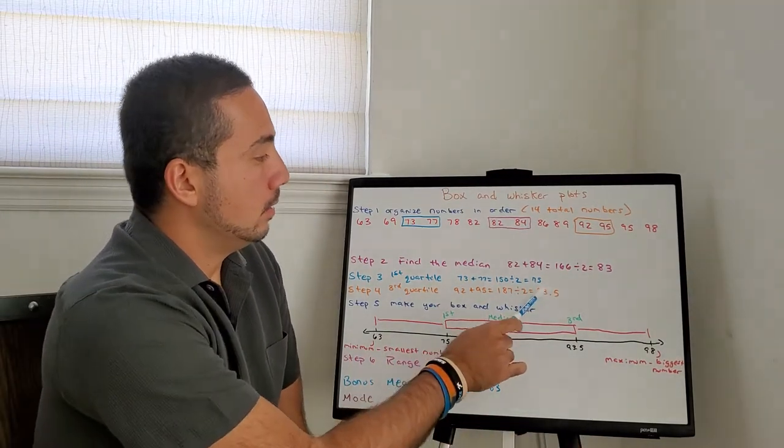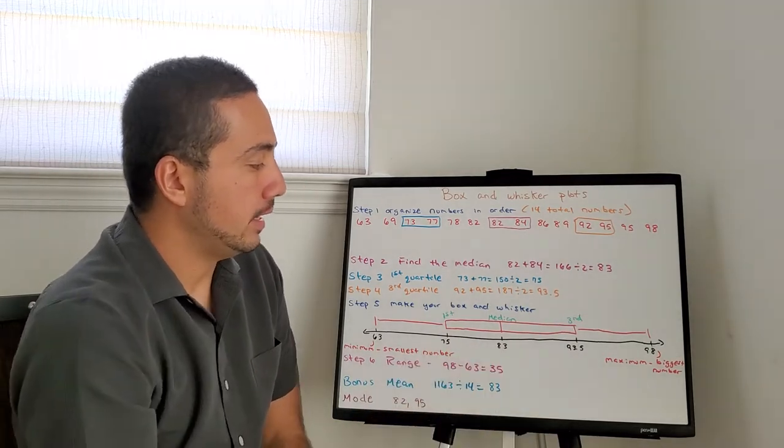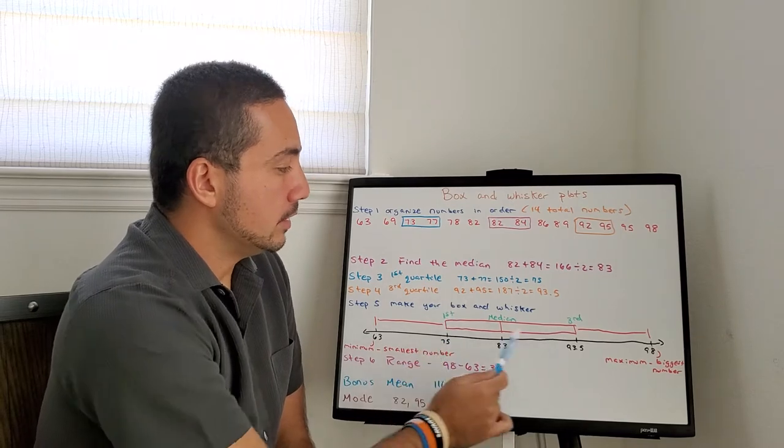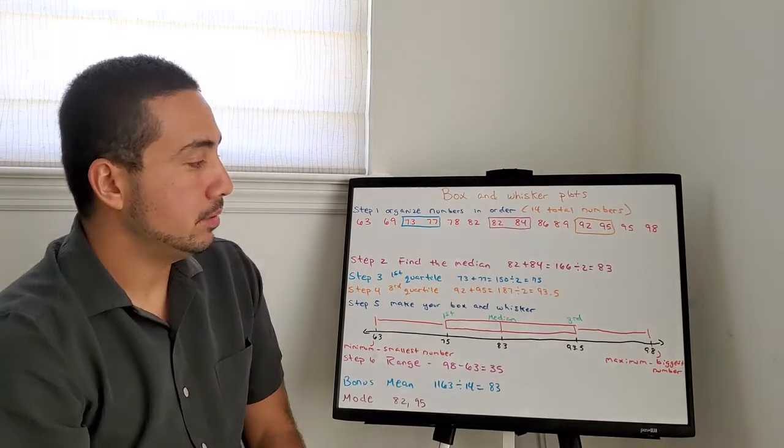Then, you mark off your lower quartile, your upper quartile, first and third, same thing. And then, your middle. Make your little box on the first and third quartile. Line those in the median. That's your box plot.